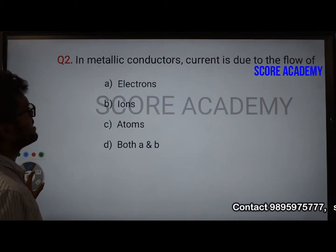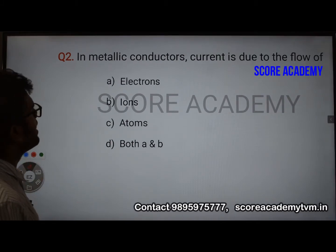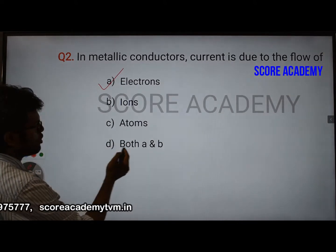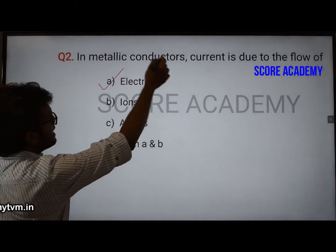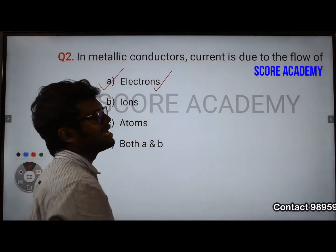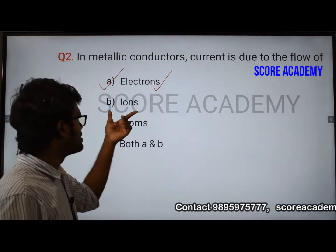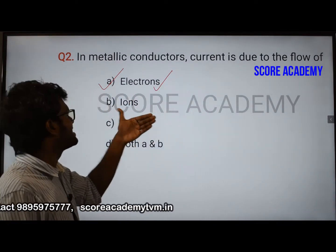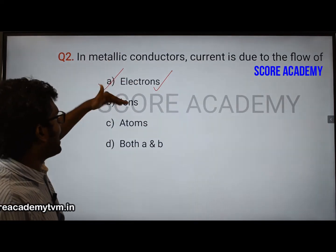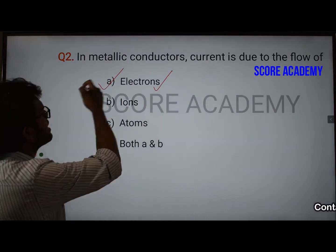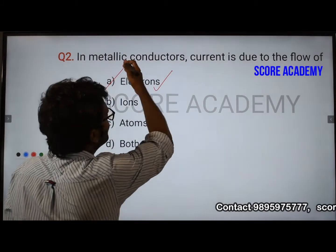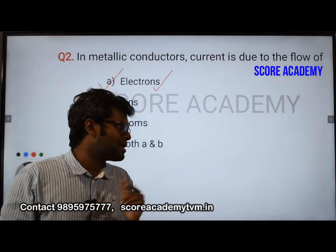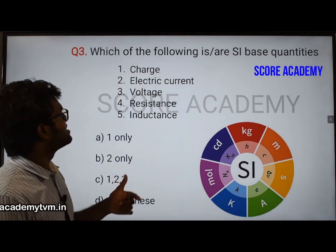In metallic conductors, current flow is due to the flow of electrons. In electrolytes, gases, or ionic gases, ions are responsible for conduction. So the right answer is electrons — in metallic conductors, electrons are responsible for the current. That is very simple.